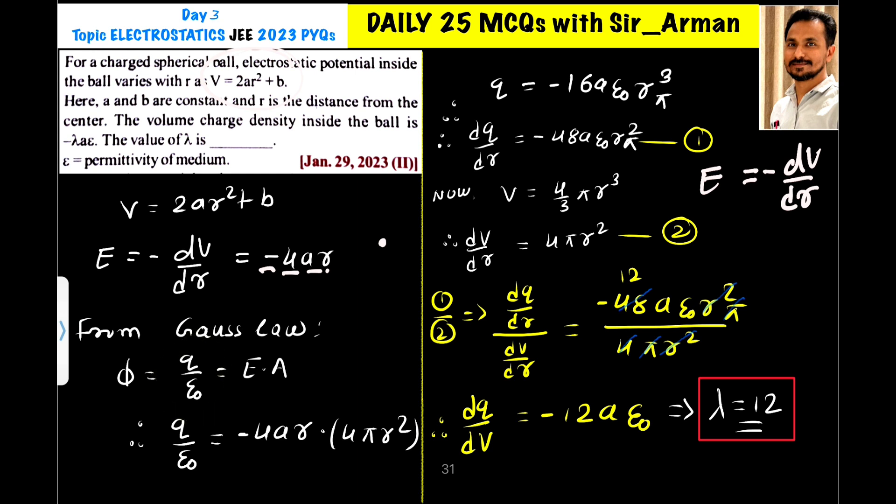And we also know that flux is given by equation flux equals E into A. So we compare this equation, so Q by ε₀.